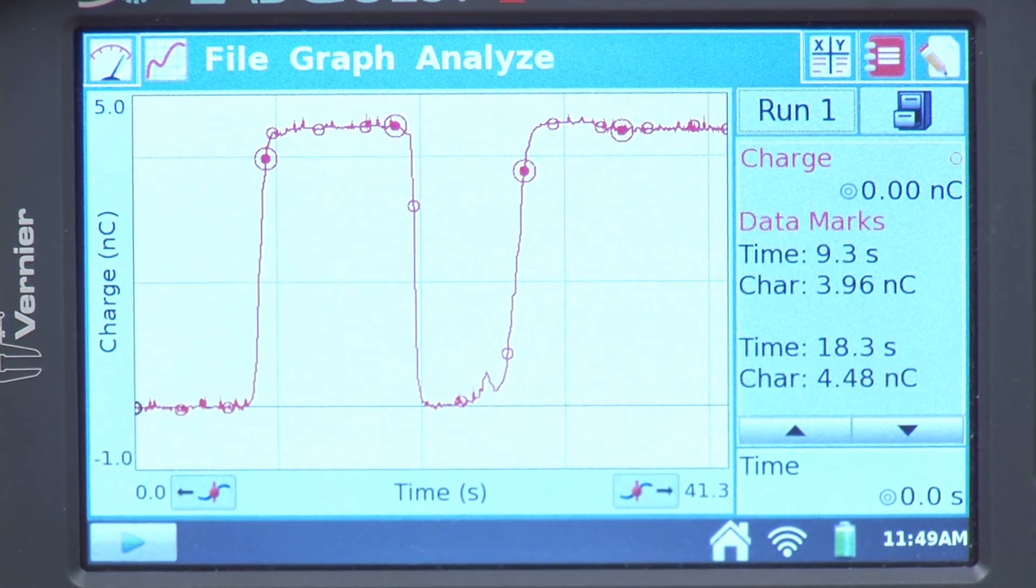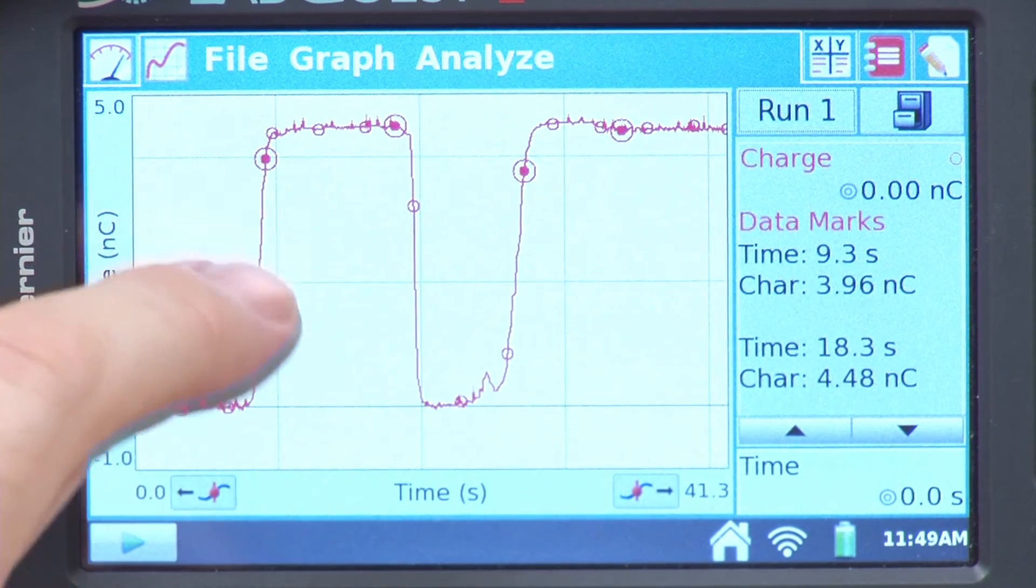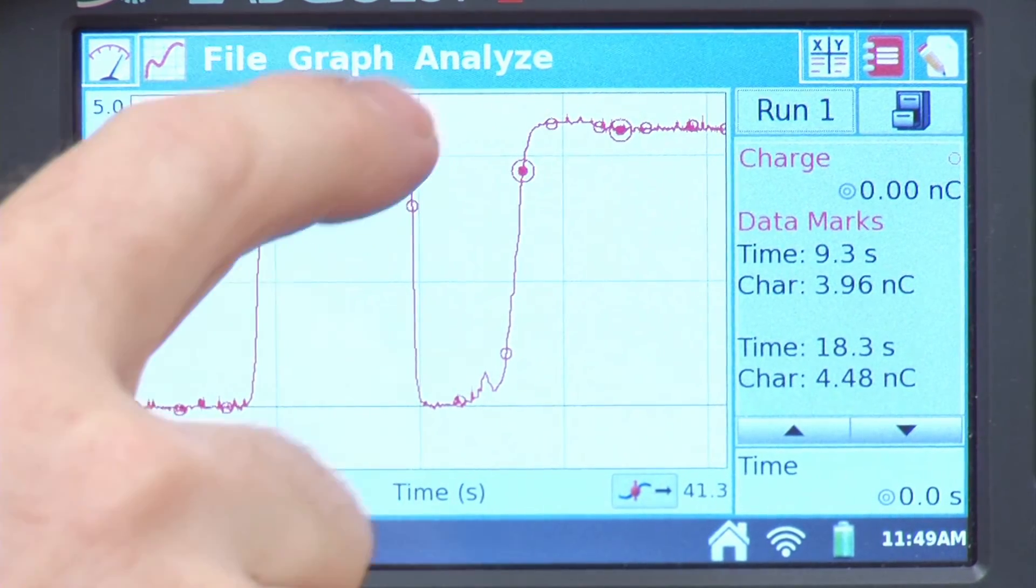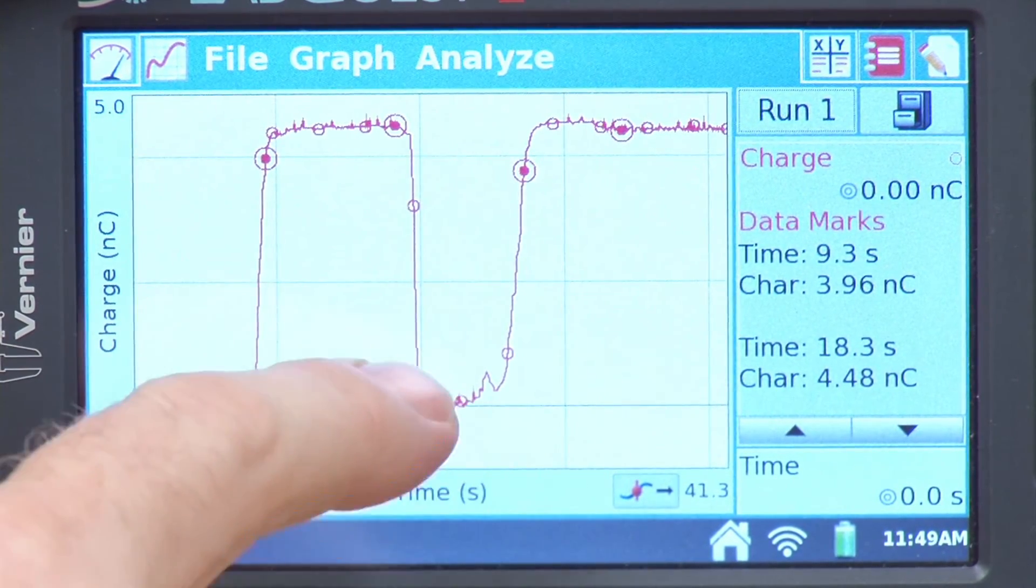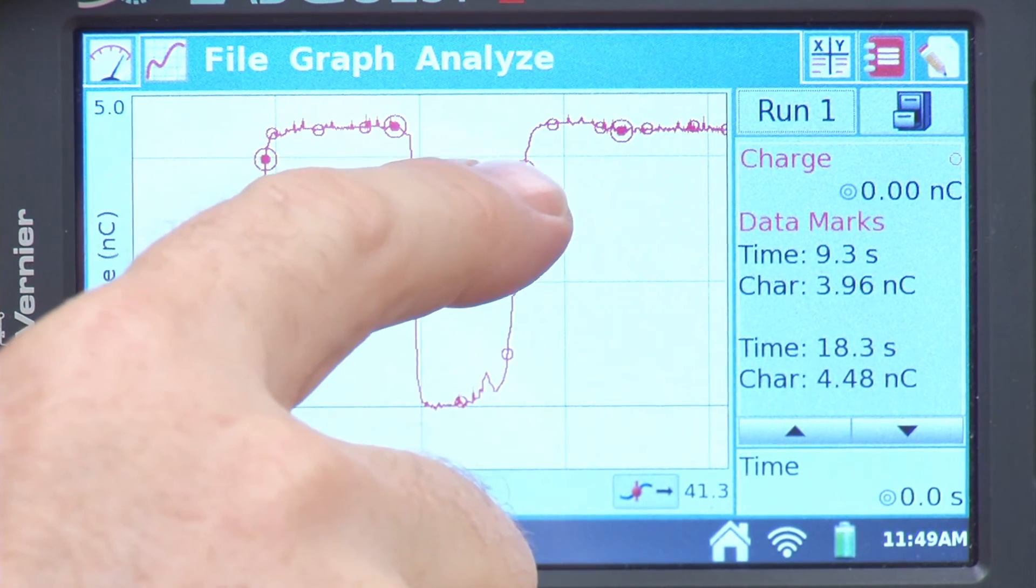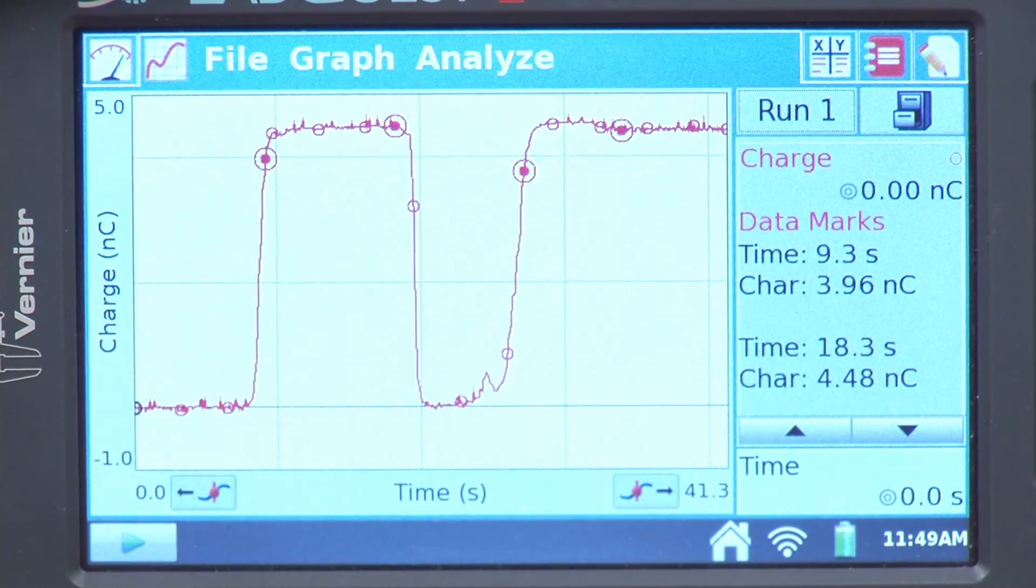I'll hit stop. We have some interesting data here. We see that when I first put the white disc inside the pail, we end up with a charge on there. When I pull it back out, nothing happens. But when I put it in and actually touch the pail, then when I remove it at this point, we leave excess charge on the pail there.